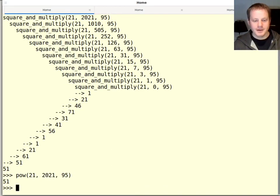So if I say 21 to the power of 2021, mod 95, it really does that same computation I just showed you with my square and multiply algorithm. It's just built into Python. And that's the way it works.